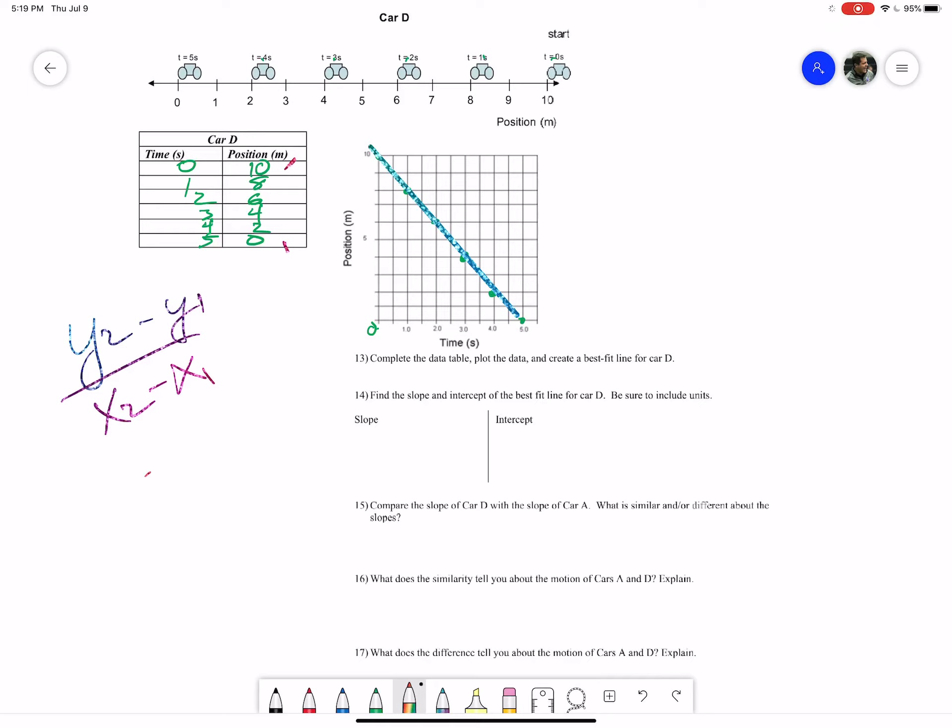Our y2 is going to be this point here. Our y1 is that point. So y2 is going to be zero meters. Y1 was 10 meters. X2 is still five seconds. X1 is still going to be zero seconds.